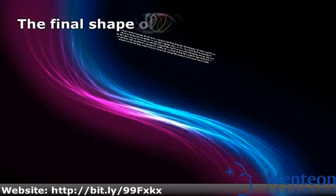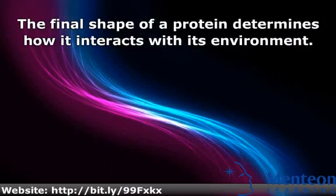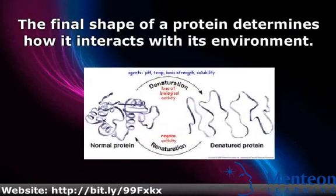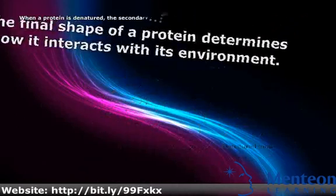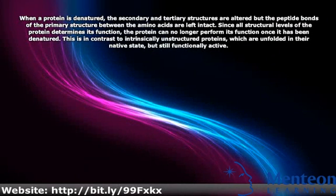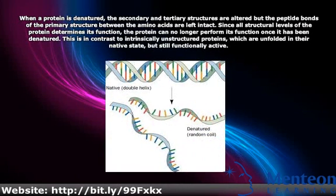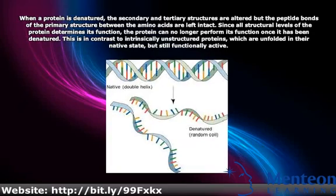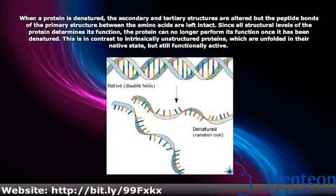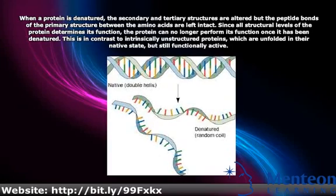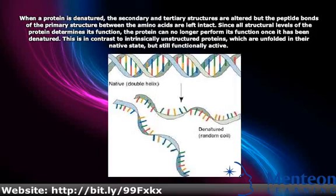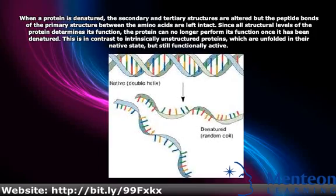The final shape of a protein determines how it interacts with its environment. When a protein is denatured, the secondary and tertiary structures are altered but the peptide bonds of the primary structure between the amino acids are left intact. Since all structural levels of the protein determine its function, the protein can no longer perform its function once it has been denatured.